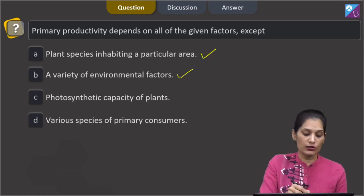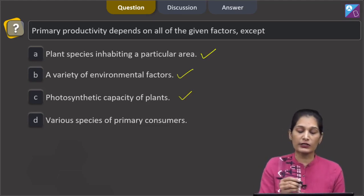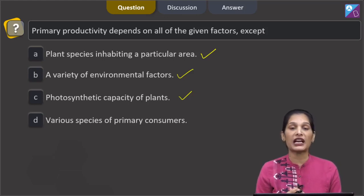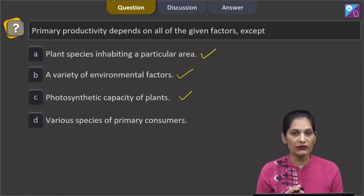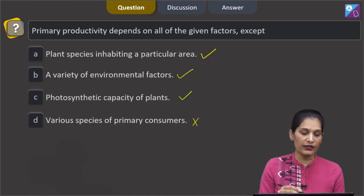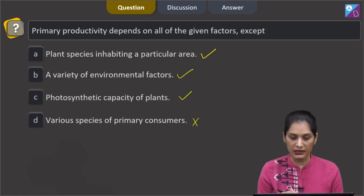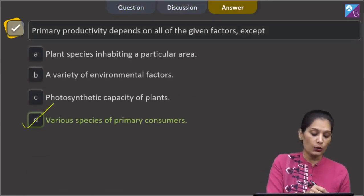Photosynthetic capacity of plants - this is also true. Option d: various species of primary consumers. Primary consumers are herbivores; they do not decide the primary productivity. Primary productivity is majorly decided by the producers. So this is not the factor which can control primary productivity. The correct option for the given question is d: various species of primary consumers.